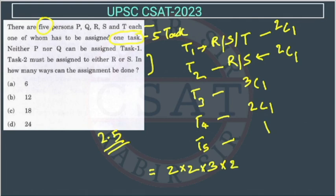This works out to 4 × 3 = 12, then 12 × 2 = 24. So the answer is 24, which is option D.